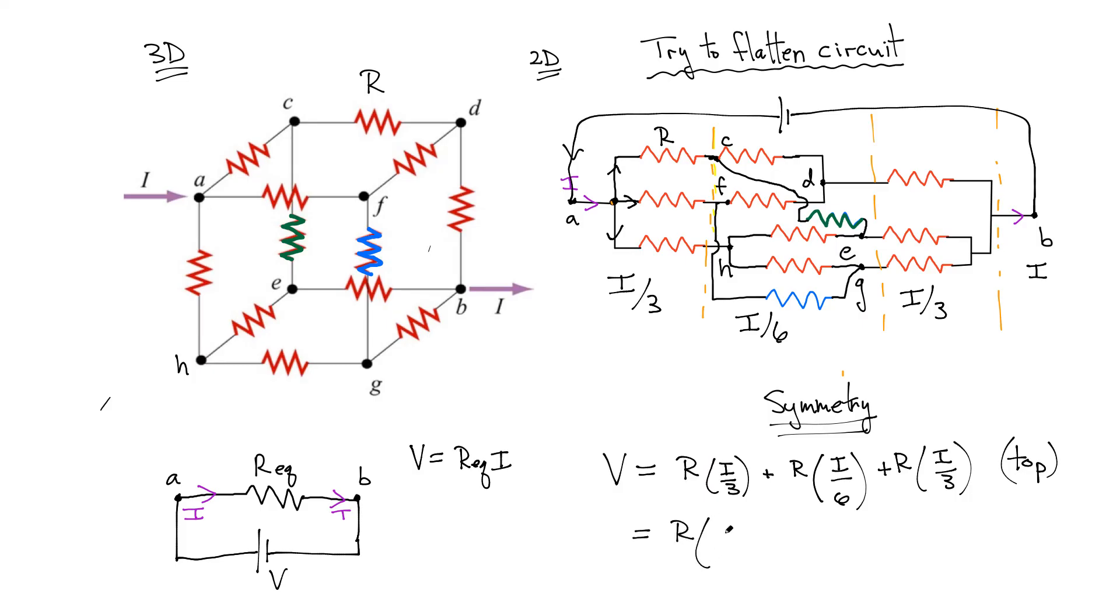Now if you combine everything, what you're going to end up is I over 3 plus I over 6 plus I over 3. At the end of the day, if you add all these fractions now, you put everything over 6, you're going to end up getting 5 over 6R multiplied times the current equals to the voltage difference across that entire network.